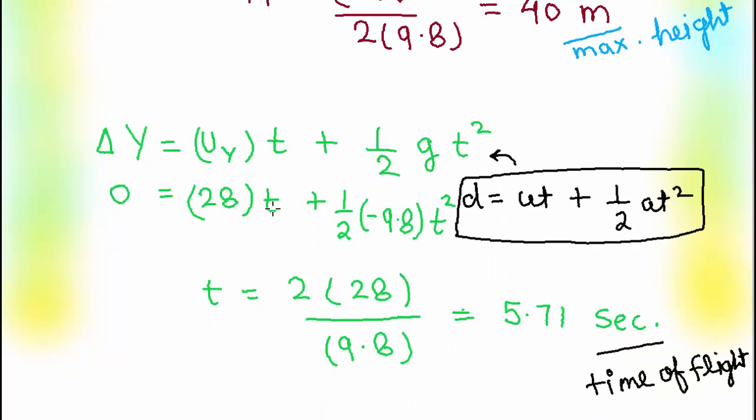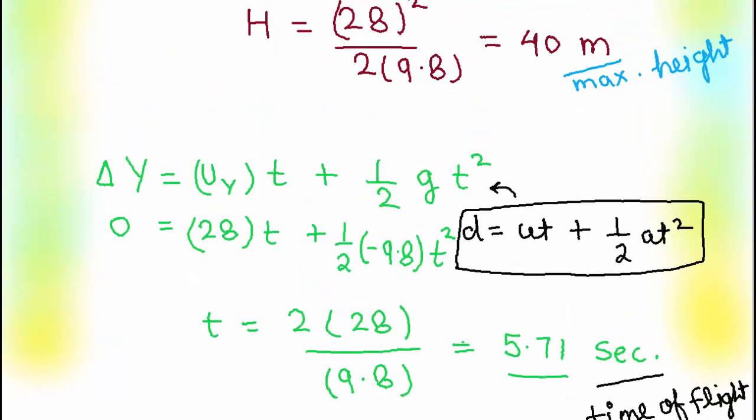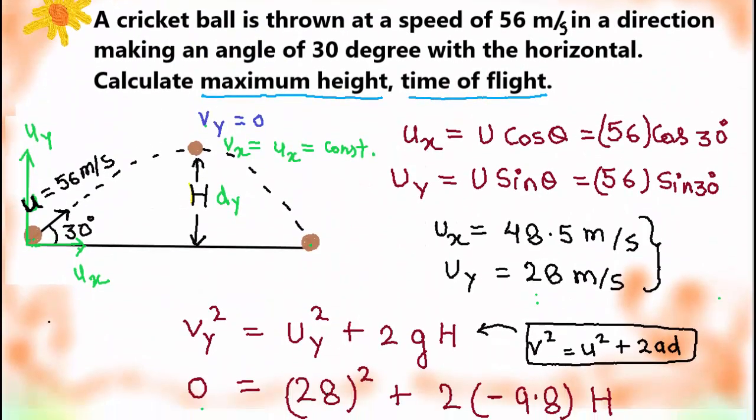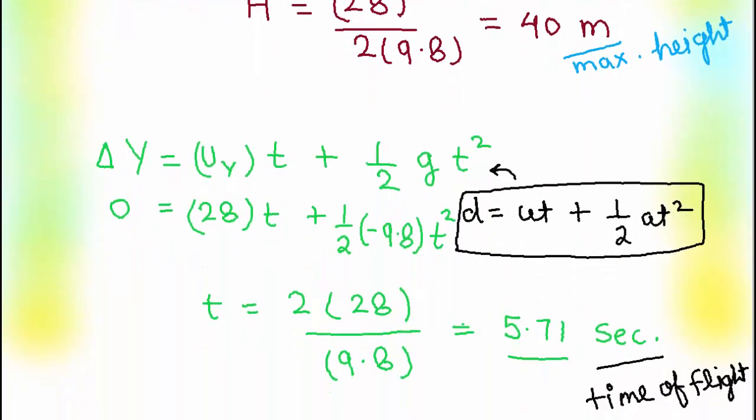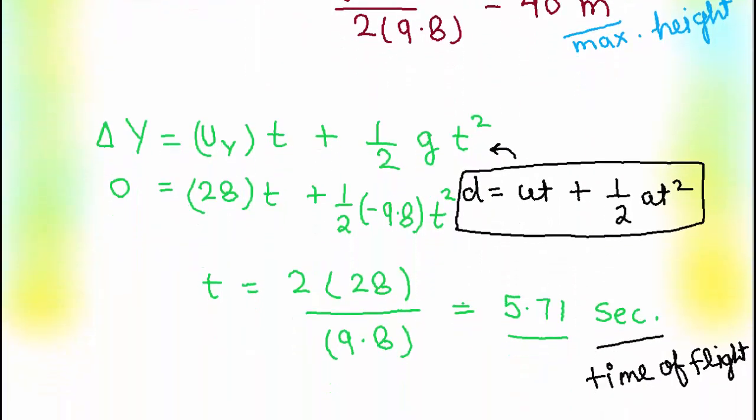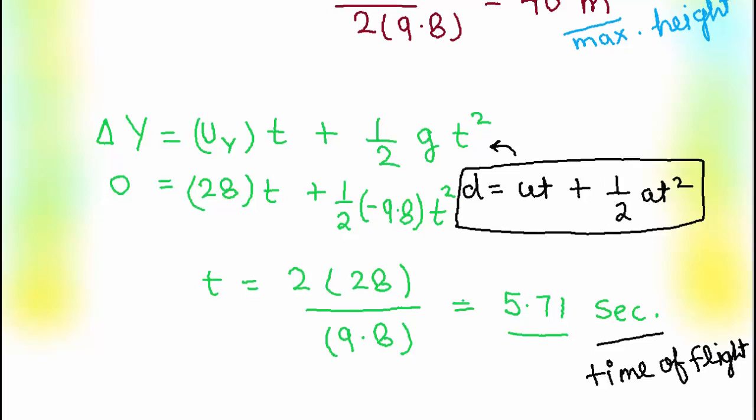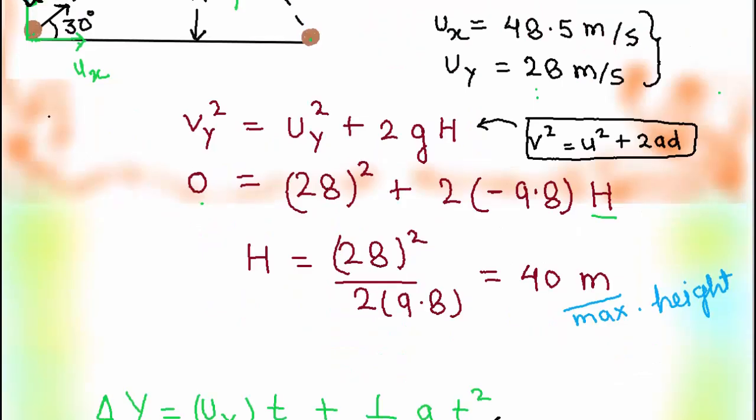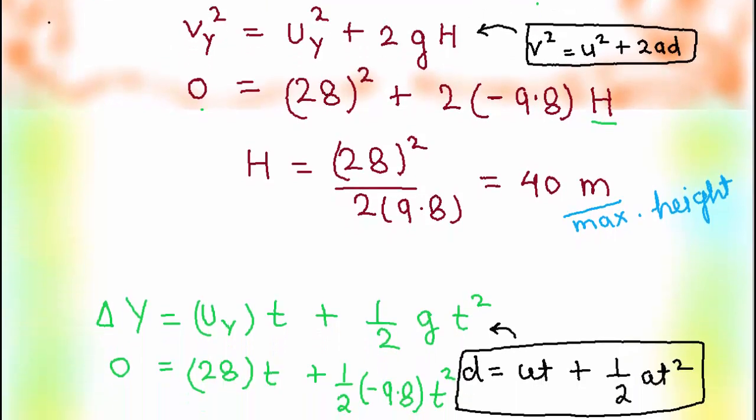Uy is 28, T half, minus 9.8 for gravity and T square. Solve this equation you will get 5.71 seconds for time of the flight. So these are the steps to find maximum height and time of the flight. Please keep in mind, you need to use these steps in all the projectile motion problems to solve maximum height and time of the flight. Steps will remain same. Even formulas and kinematic equations will remain same. Values might change for every problem.